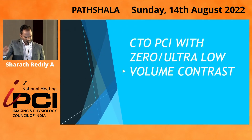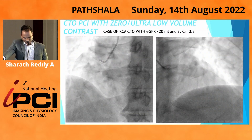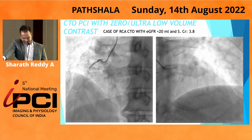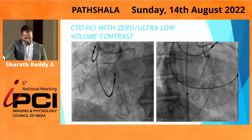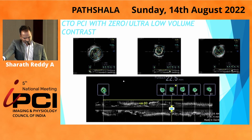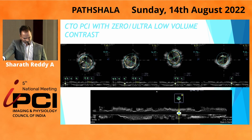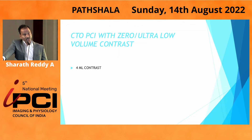In patients with renal failure requiring zero or low-volume contrast: in this case, we used a retrograde wire parked at the distal cap, then performed antegrade wiring. The entire case — entry, sizing, stenting, and post-assessment — was done with IVUS. We completed the case with only 4 ml of contrast.